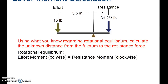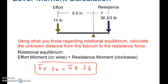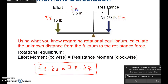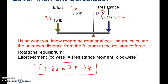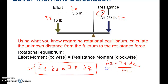In these types of equations you'll usually be given three values. Here we have FE, FR, and DE, but our DR is what we need to solve for. We can use our rotational equilibrium equation and rearrange it mathematically to solve for DR.